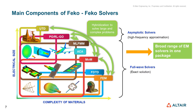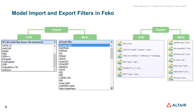Based on the complexity of the materials and electrical size of the problem, the users can choose between different solvers. FEKO also allows the users to hybridize these solvers to solve large and complex problems. FEKO offers various options of importing and exporting CAD geometries as well as mesh geometries, such as CATIA, Parasolid, STEP, or Nastran files and so on.